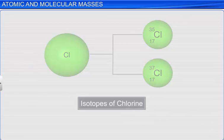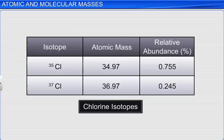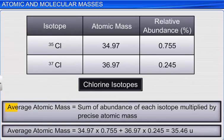We know that when atoms of the same element possess different atomic masses, they are known as isotopes. Hence, for isotopes, the average value of the atomic masses is considered as the atomic mass. For example, chlorine has two isotopes with average atomic masses of 34.97 and 36.97 units respectively. The relative abundance of the isotopes is 0.755 and 0.245 respectively. Relative abundance refers to the abundance of isotopes of an element as naturally found on a planet. Average atomic mass of an isotope is the sum of abundance of each isotope multiplied by the precise atomic mass. Thus, the average atomic mass of chlorine is calculated as 35.46U.